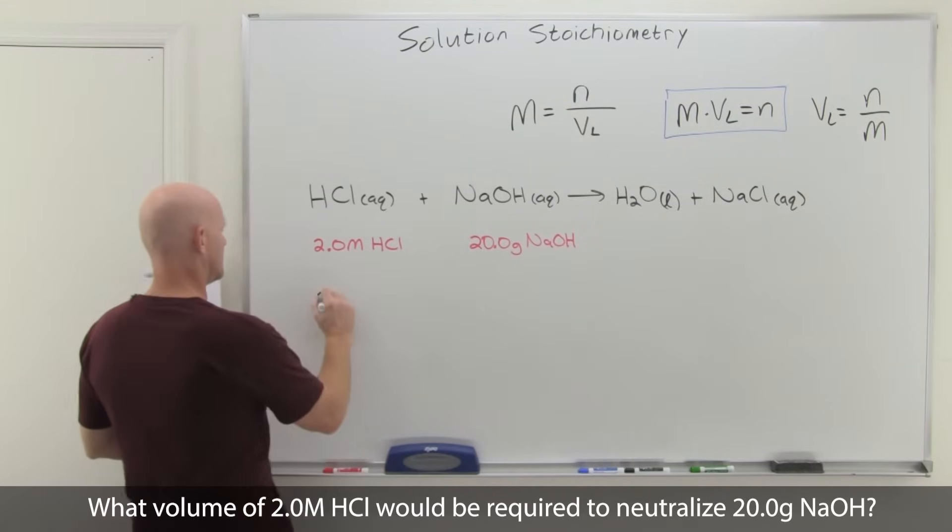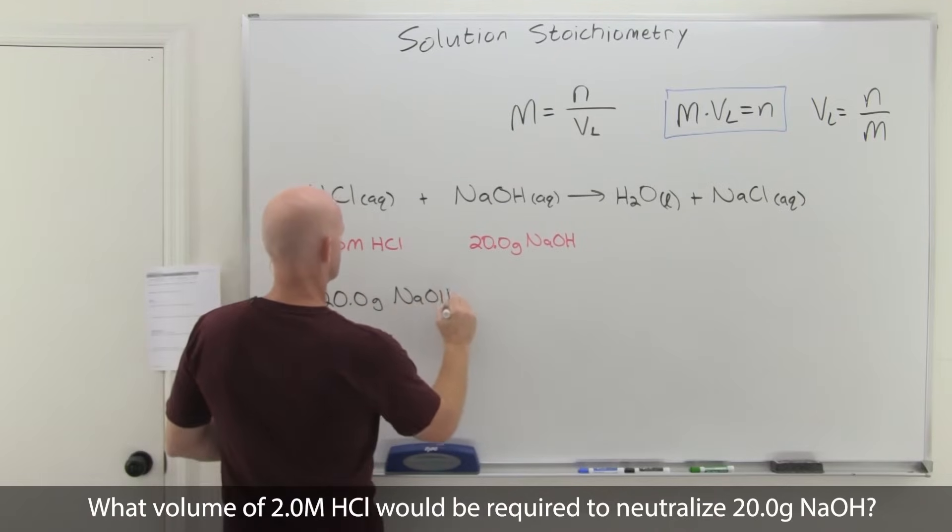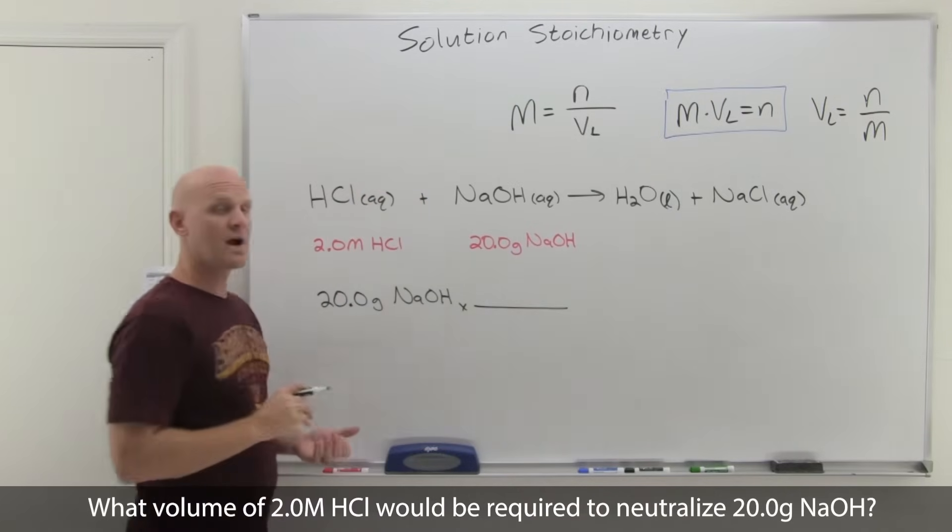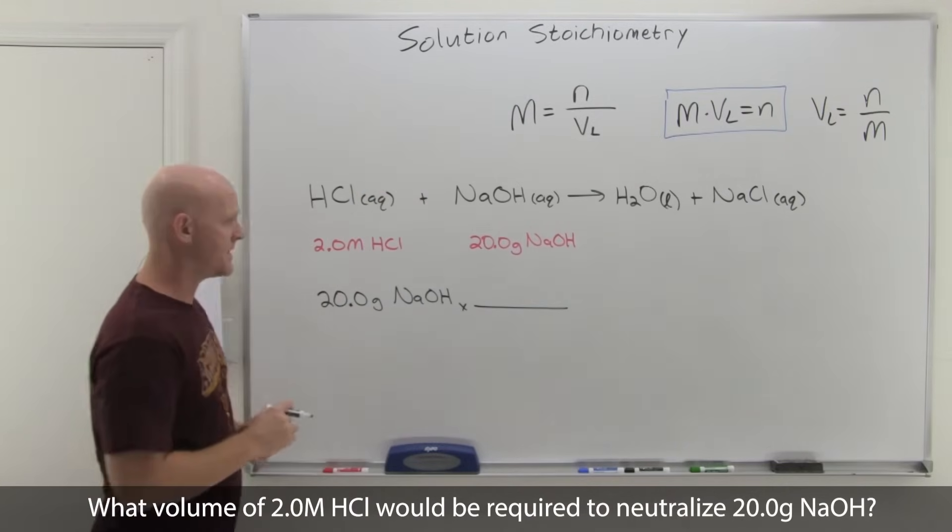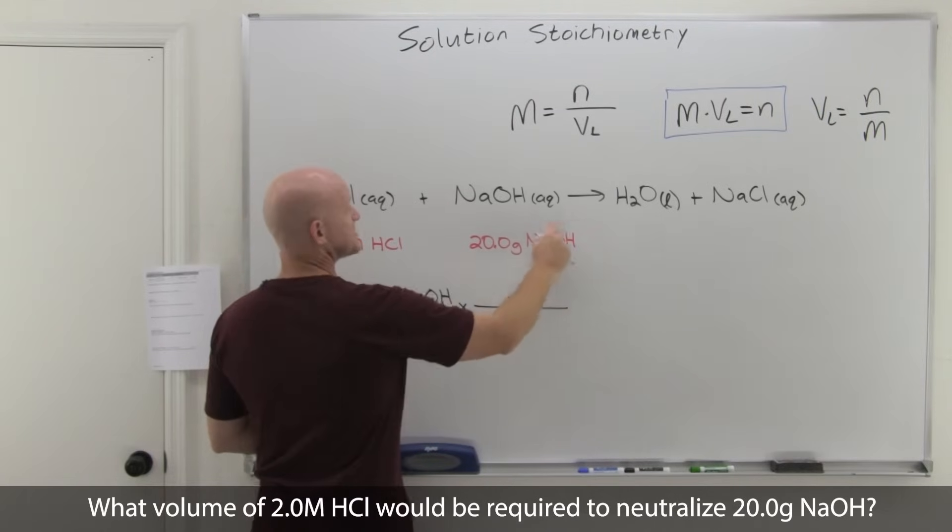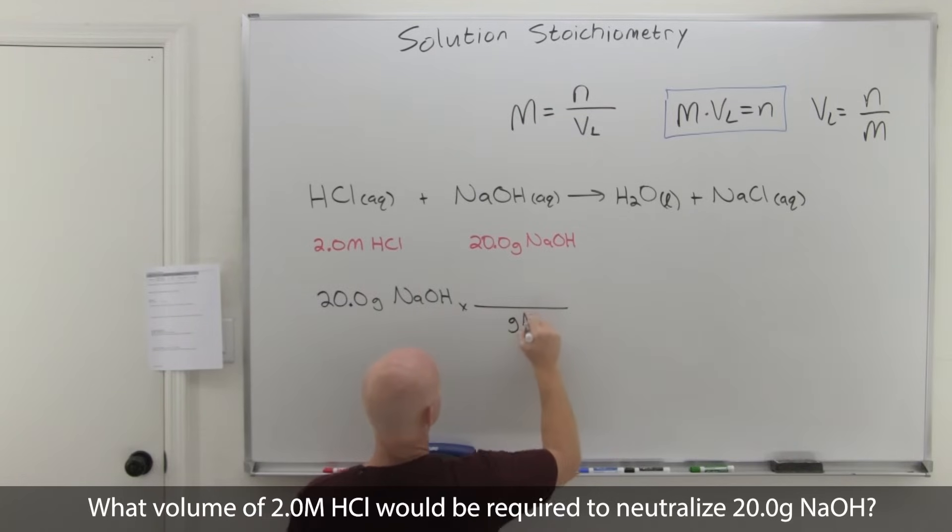We'll take that 20.0 grams of NaOH. The connection between grams and moles is always the molar mass right off the periodic table. Sodium is 23 grams per mole, oxygen 16, hydrogen is 1, and that adds up to a total of 40. We'll put grams of NaOH in the denominator so they'll cancel, moles in the numerator. Your molar mass is always the mass of 1 mole, in this case 40 grams.